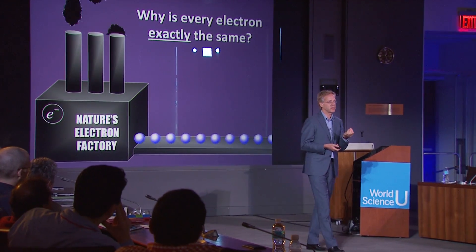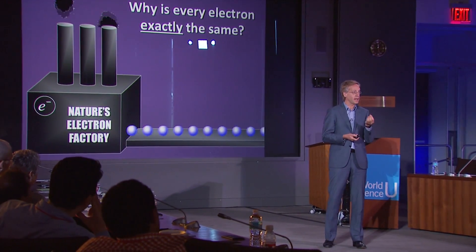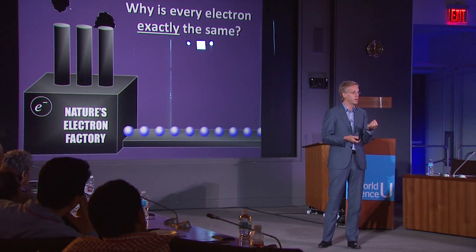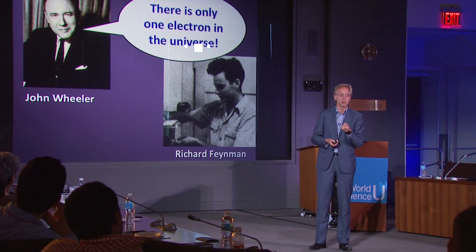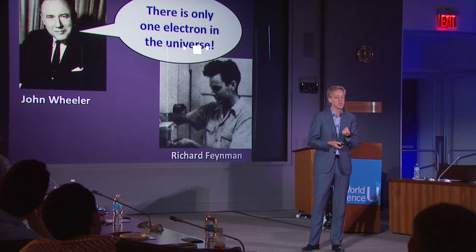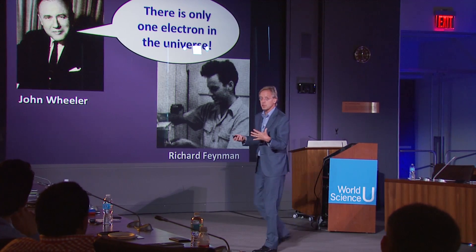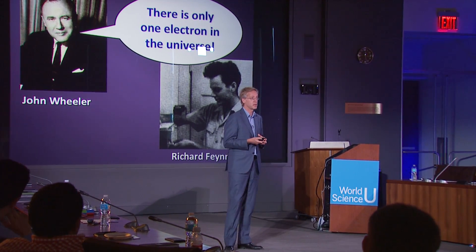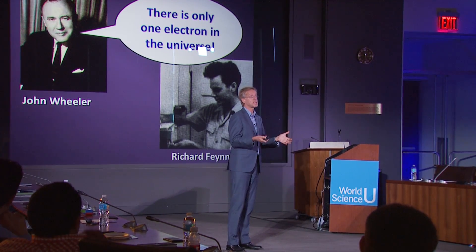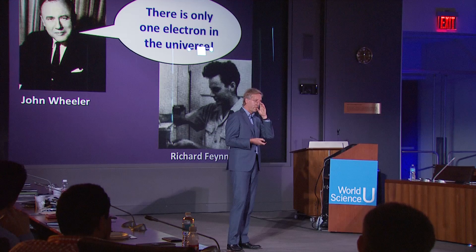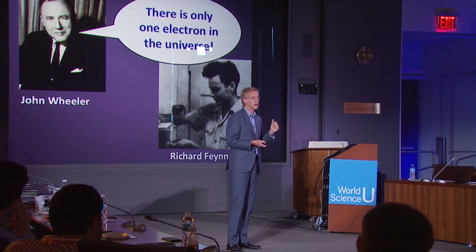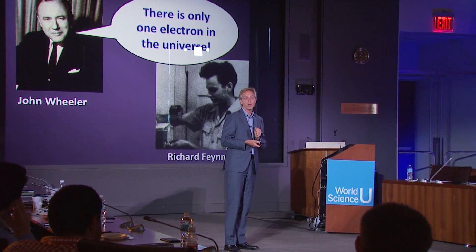There's a great story about how we think about this, and it goes back to John Wheeler — John Wheeler and his graduate student at Princeton at that time, Richard Feynman. Feynman describes this story in his Nobel Prize lecture. In the middle of a Saturday evening, he's called by Wheeler, who says: I know why all the electrons are the same, because there's only one electron in the universe. Let me explain his theory — it's really a crazy theory.